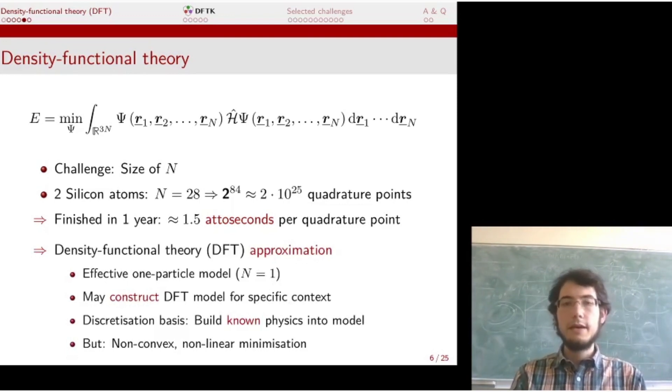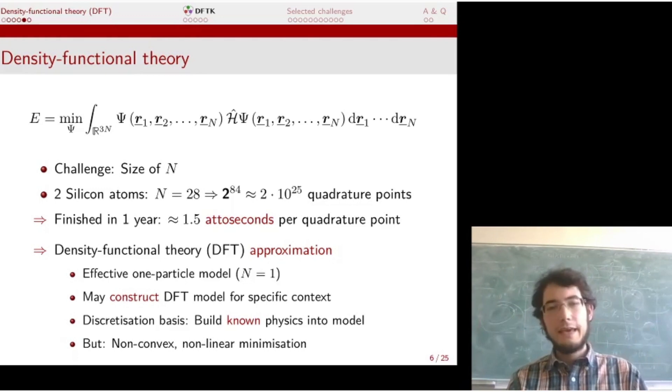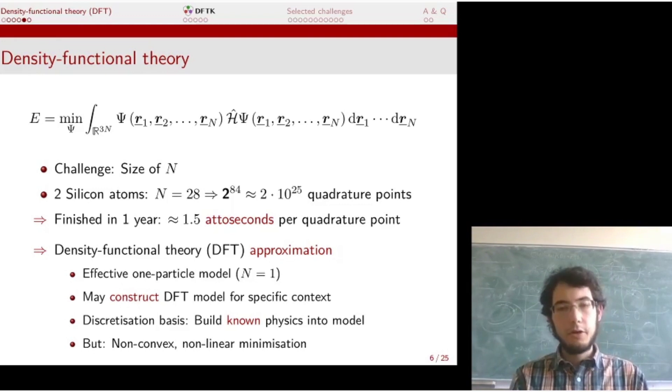So what people do is approximations. One of them is density functional theory. You construct an effective one-particle model. By making these approximations, you're able to set effectively N to 1. A few disadvantages: of course it's an approximation, and in many cases you need to adapt the model slightly depending on the context, so it's not universal anymore. It's pretty universal still, but some tweaking needs to be done. Another problem is that whereas the original minimization is nice and convex, the DFT minimization is non-convex and non-linear. Also, we do a second trick when we discretize: we don't just use two quadrature points randomly like a grid. We use a slightly more complicated discretization basis which builds known physics into the problem.